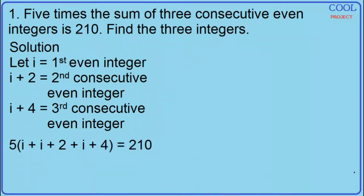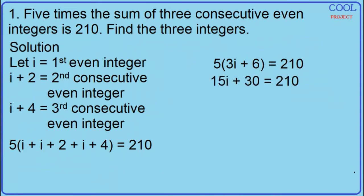The equation is 5 times the quantity (i plus i plus 2 plus i plus 4) is equal to 210. Simplify: 5 times the quantity (3i plus 6) equals 210. Distribute.